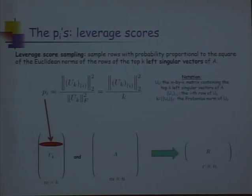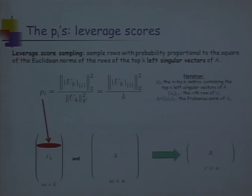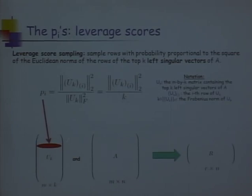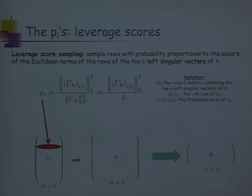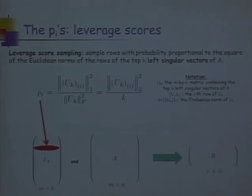Remember, the columns of U_K are pairwise orthogonal and normal, so you know a lot about the columns. For the rows, all you can say is that the Euclidean norms are between 0 and 1. You use those Euclidean norms squared of the rows of U_K to form your probability distribution. It looks like there is an extra parameter K here, but in all the applications of leverage scores, this parameter K will not be a free parameter — it will be directly set by the formulation of the problem.